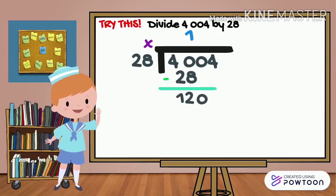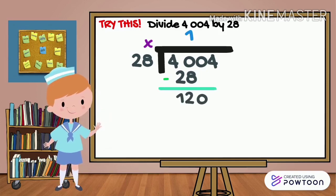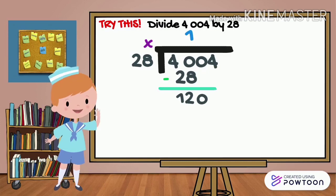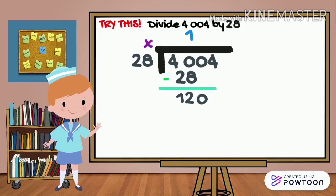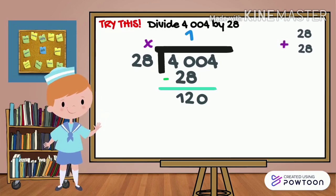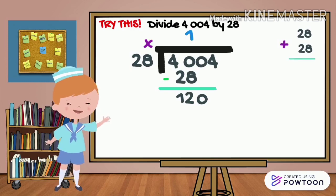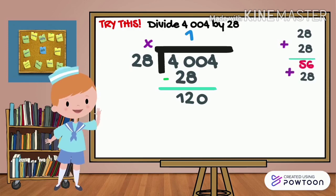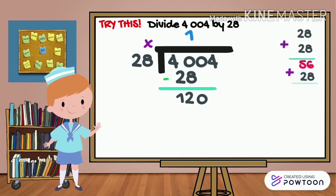So, paano natin is solve 120 divided by 28? So, gagamit tayo ng repeated addition. So, paano ba gagawin ng repeated addition? So, yung ating divisor, ang raduwin lang natin sa kanya, ay i-add natin ng paulit-ulit hanggang sa marating natin ang 120. So, 28 plus 28 is 56. Then, add another 28. So, the answer is 84.